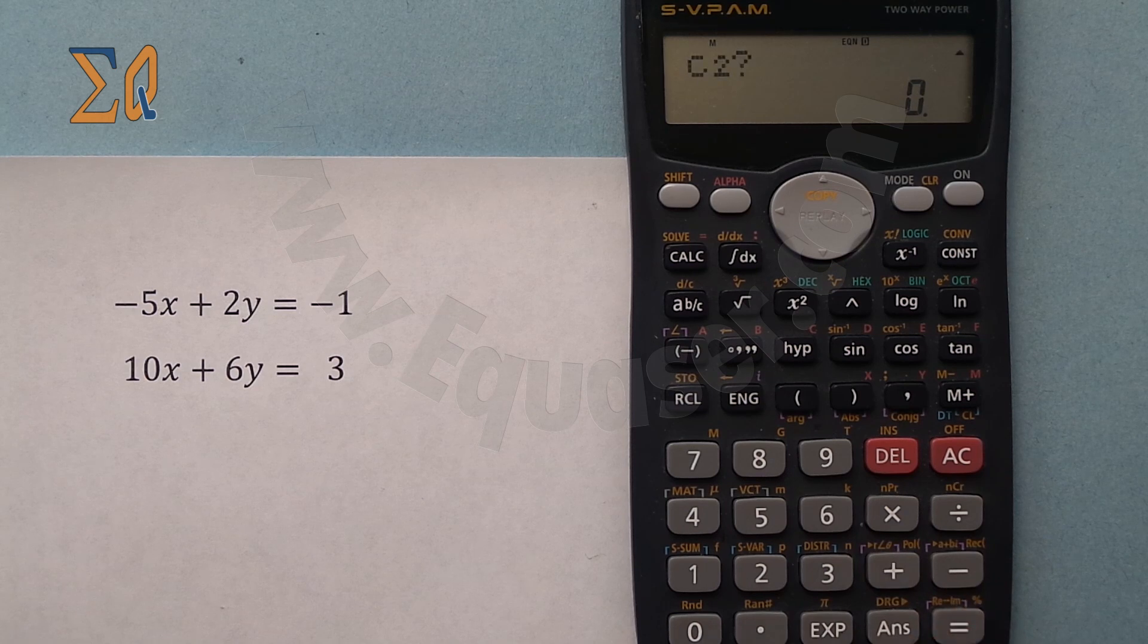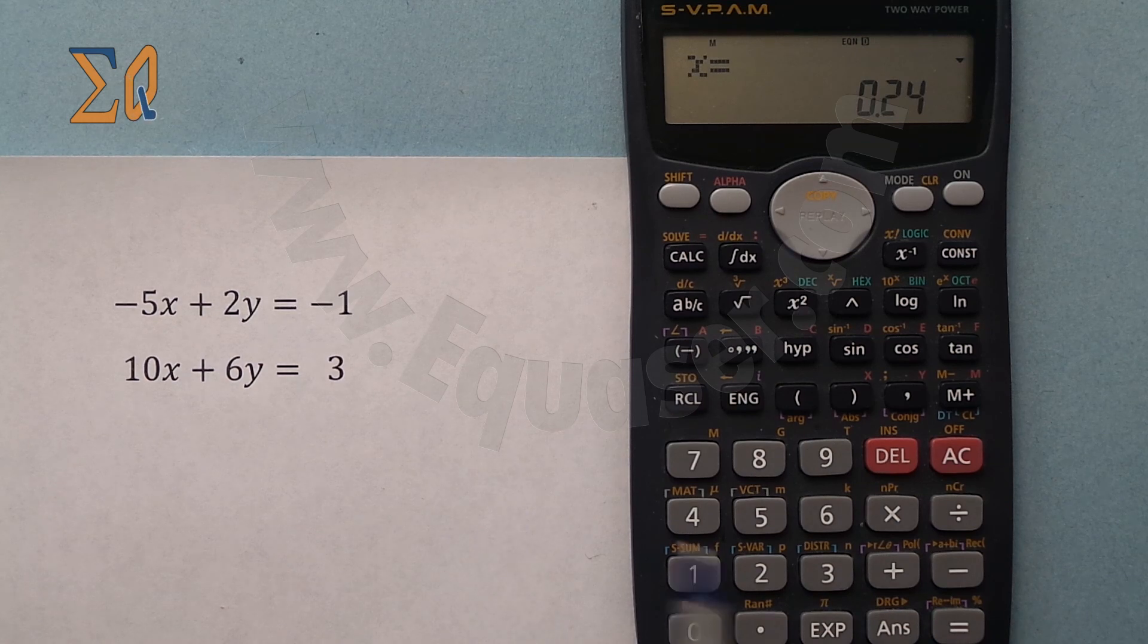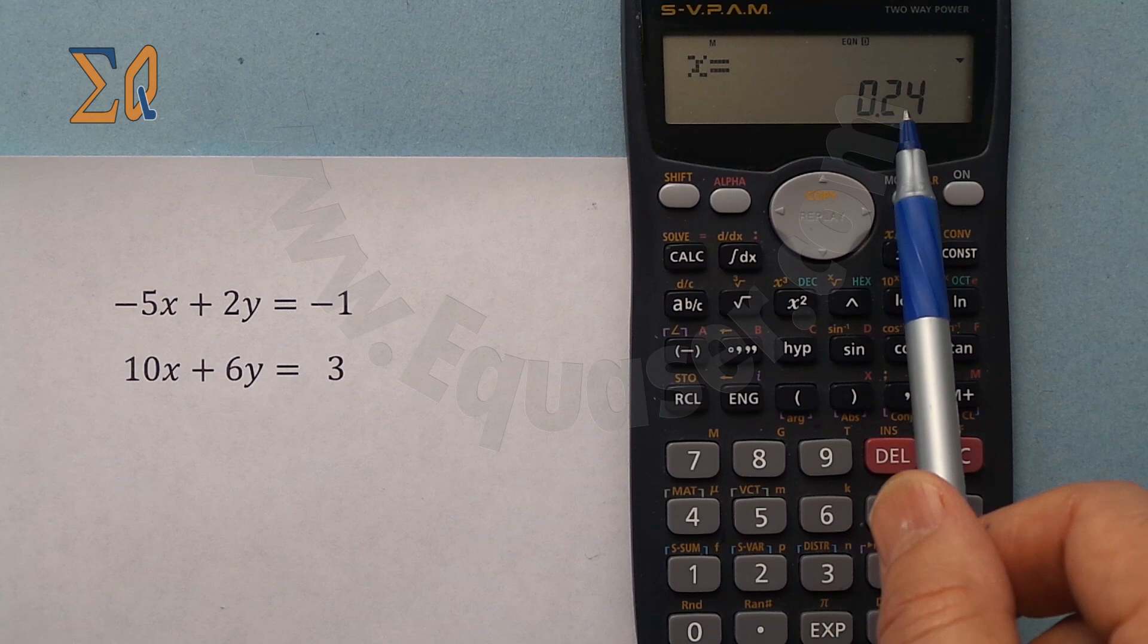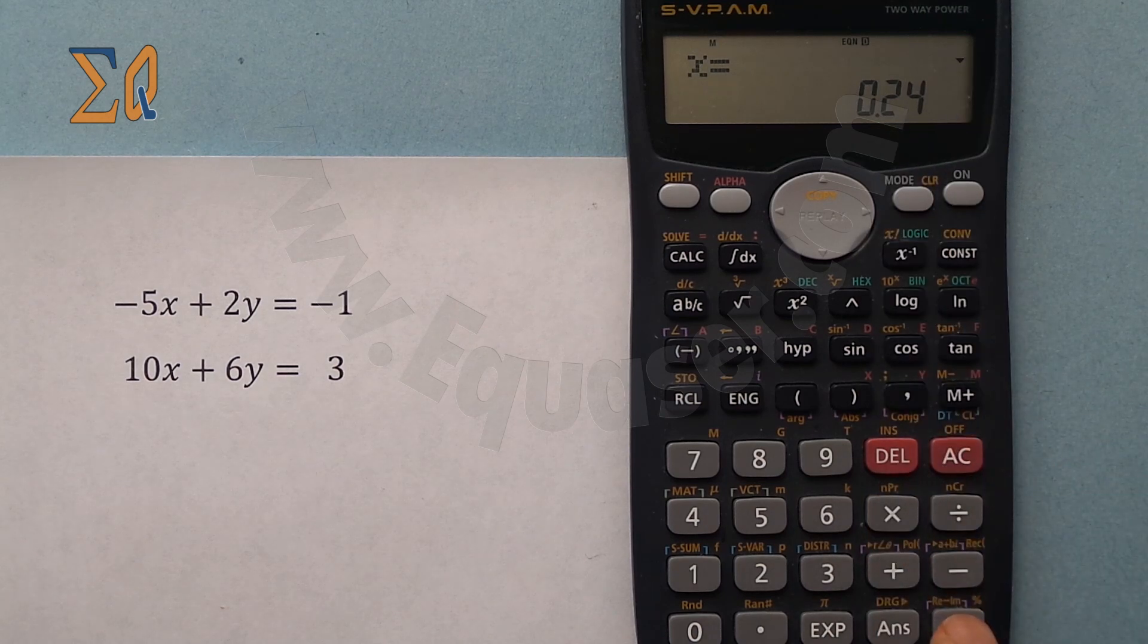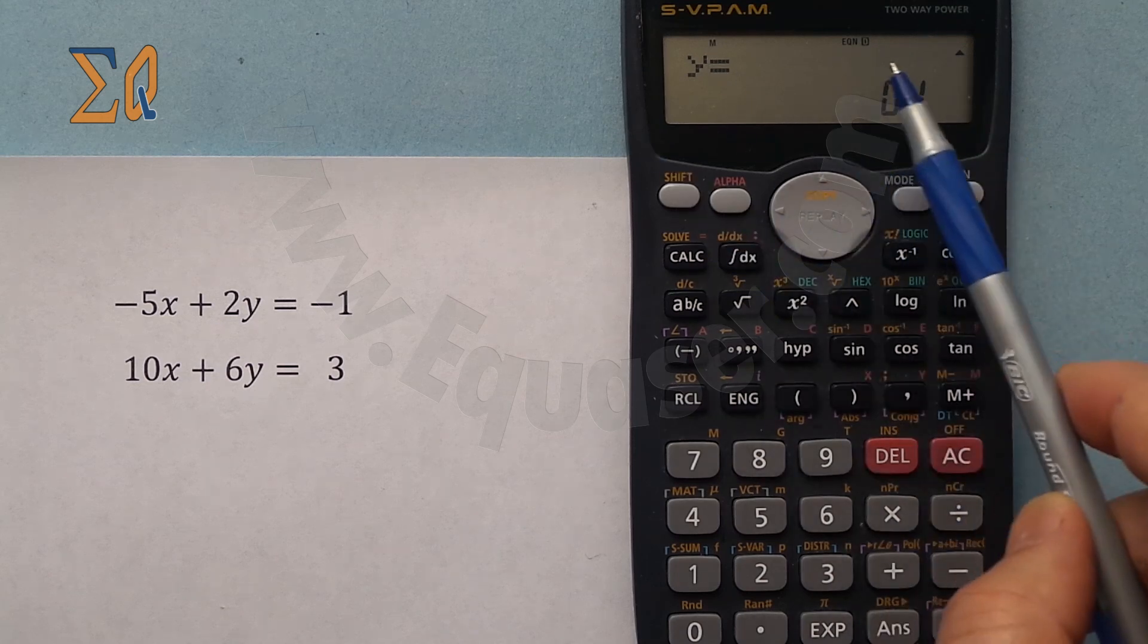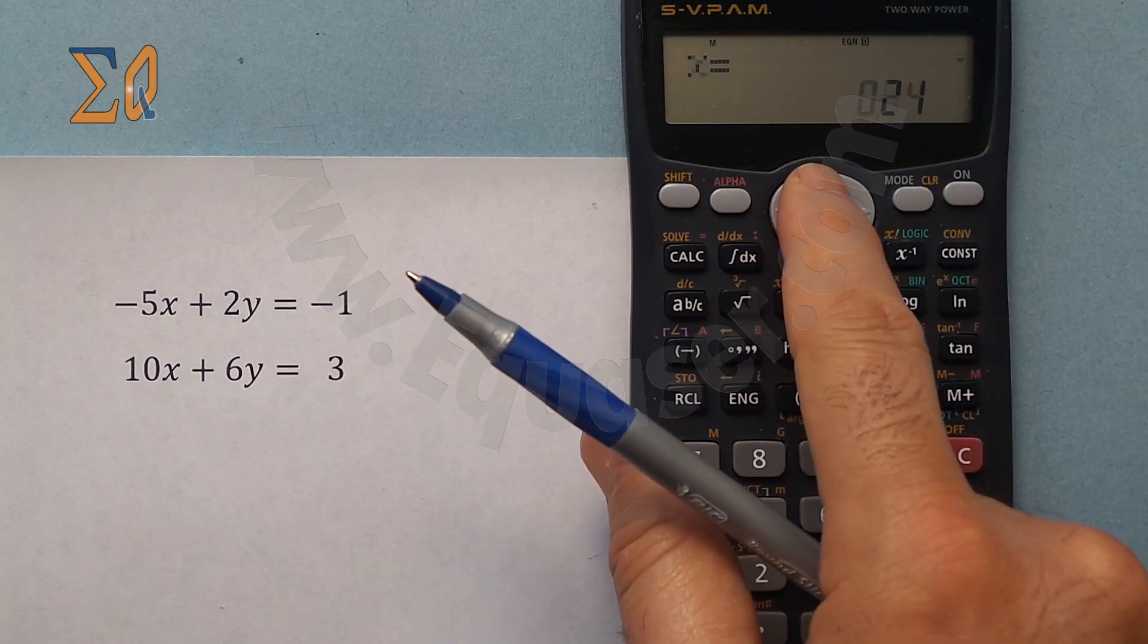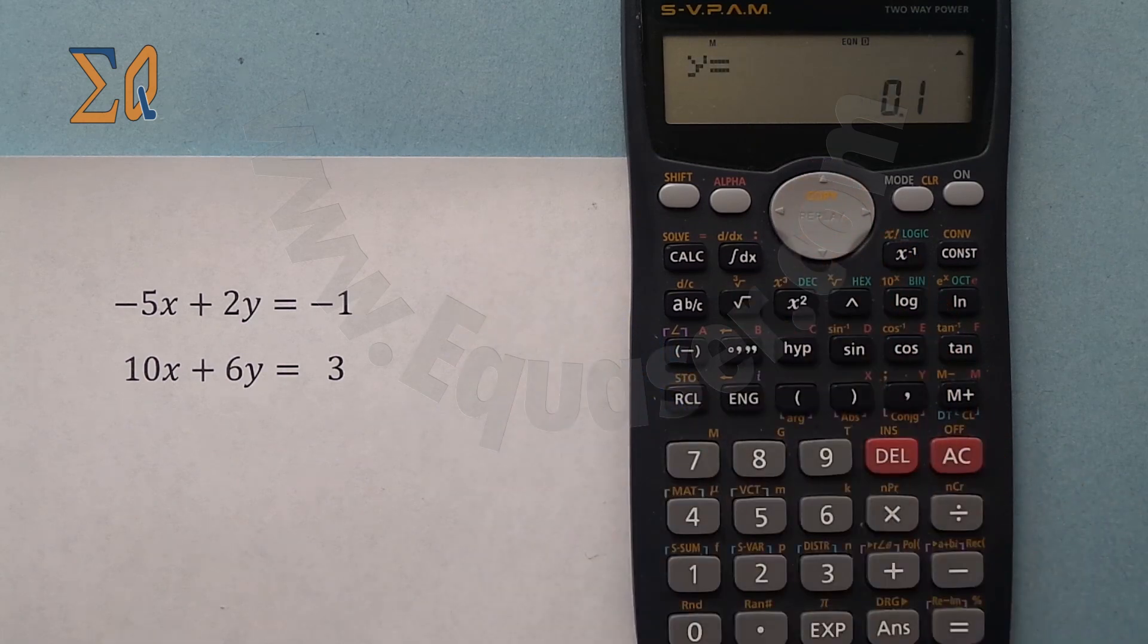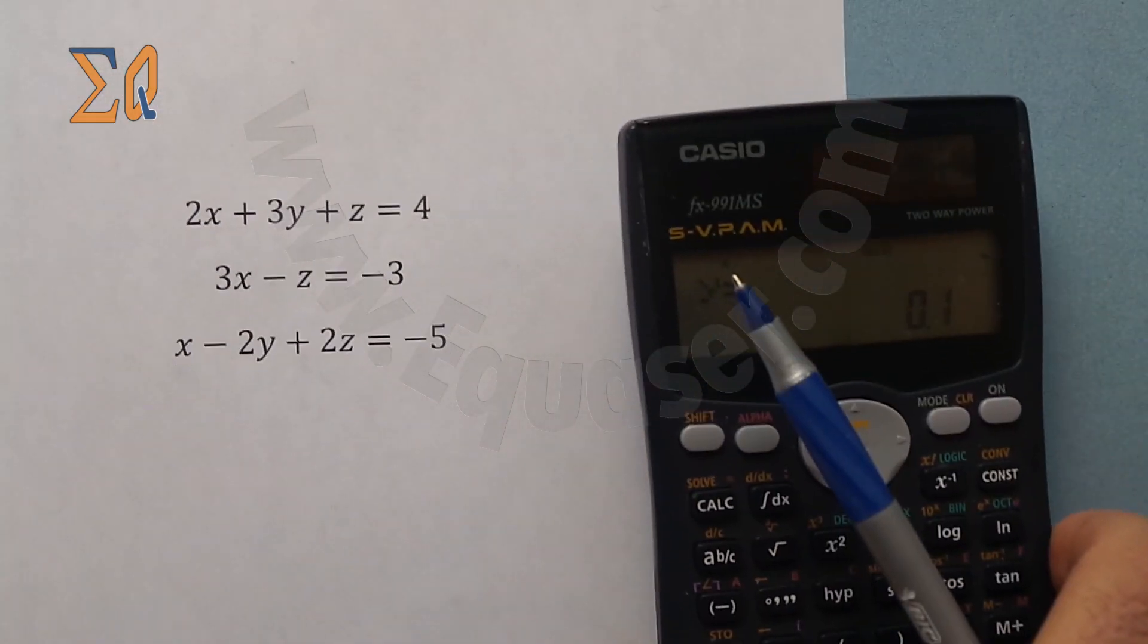As soon as I enter the last value it gives me x. X is 0.24, and then I press it again, y is 0.1. This arrow is telling me that I can go up and down and see the values.